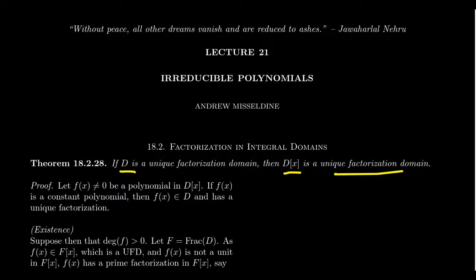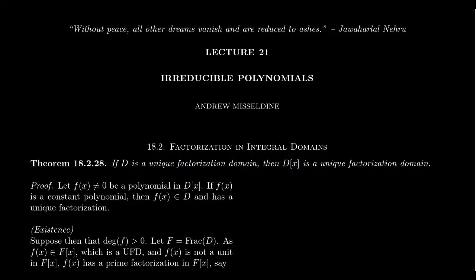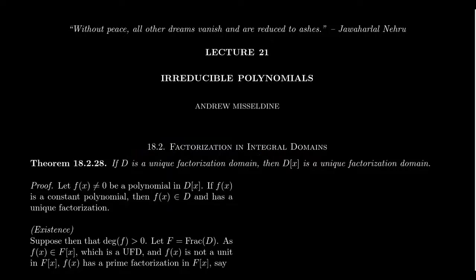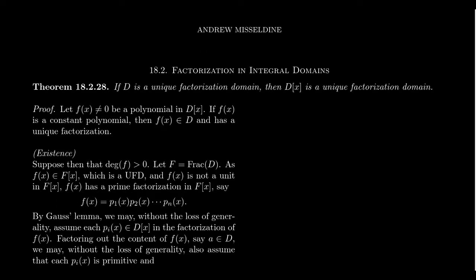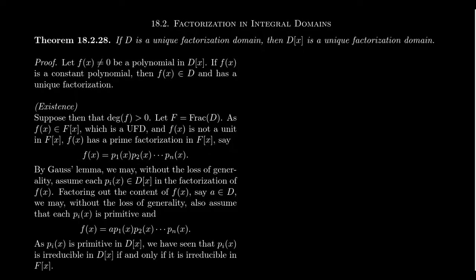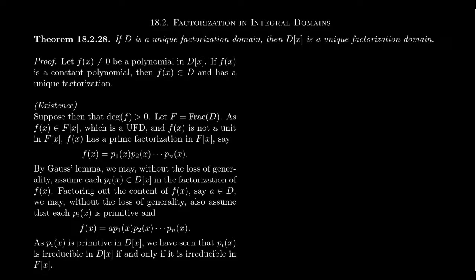We've mentioned previously that many properties of the ring D can be carried over to the polynomial ring as well. If D has unity, then D[X] has unity. If D is commutative, then D[X] is commutative. We've seen that if D was a domain, then D[X] is a domain. We were also able to show that if F was a field, then F adjoin X is a Euclidean domain, which implies it's a principal ideal domain and a unique factorization domain.